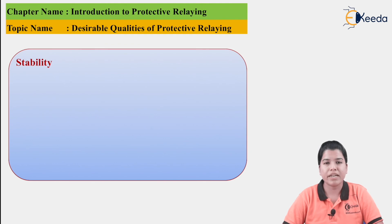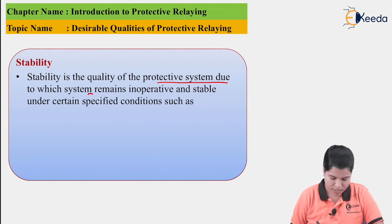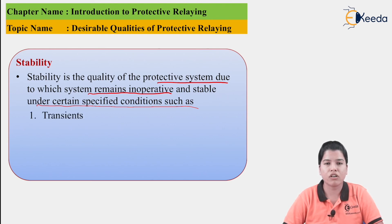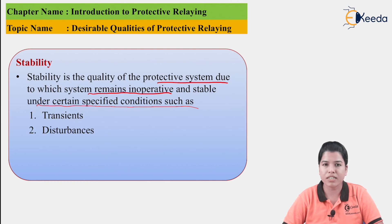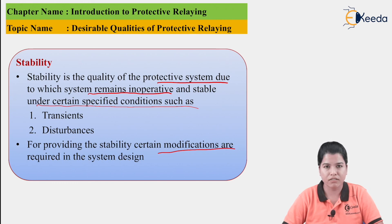The next property is Stability. Stability indicates that under any condition the protective system should remain stable. It is the quality of the protective system due to which the system remains inoperative and stable under certain specified conditions. These conditions include transients — which occur for a very small amount of time — and disturbances. Disturbances cannot be considered fault conditions; the protective relay should determine that a disturbance is not abnormal and remain inoperative. Certain modifications in the system design are required to provide stability.